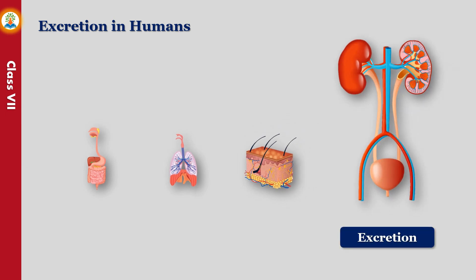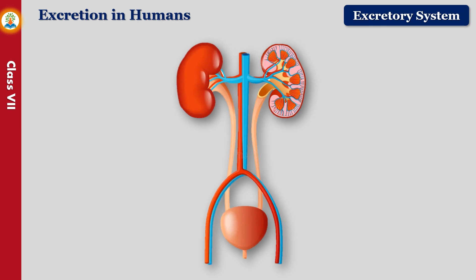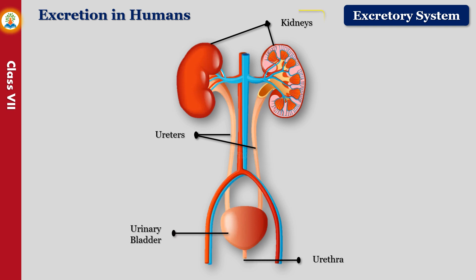Excretion is the process of eliminating toxic nitrogenous wastes from the body. In human beings it is carried out mainly by the urinary system. The various organs that form the excretory system are kidneys, ureters, urinary bladder, and urethra. Kidneys are a pair of bean-shaped, reddish-brown organs. Ureters are a pair of tube-like structures that connect the kidneys to the urinary bladder. The urinary bladder is a large muscular bag-like organ that stores liquid waste as urine temporarily. The urethra connects to the urinary bladder and opens outside through a small opening to pass out urine.